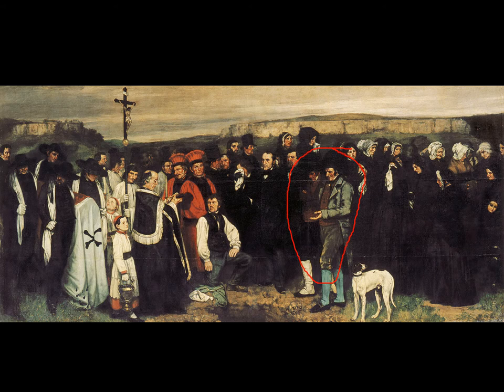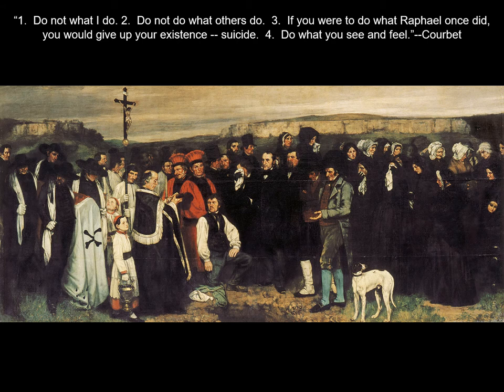Courbet began to teach students and had very specific instructions. He said: one, do not do what I do; two, do not do what others do; three, if you were to do what Raphael once did, you would give up your existence — suicide; and finally, four, do what you see and feel. Realism became a very politicized art movement because at the same moment there was a push for democracy and interest in the working class — and by the time Courbet painted this, those rights for the working class were already beginning to erode. The idea of painting unimportant working-class people on a heroic scale was radical, and this is what ushers in this new movement called realism.